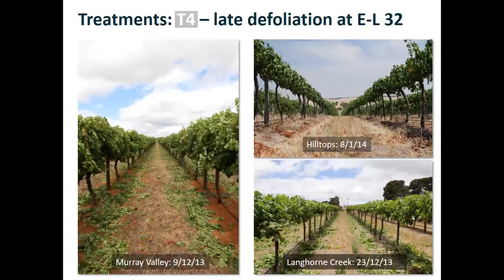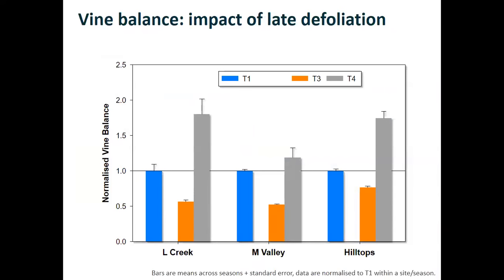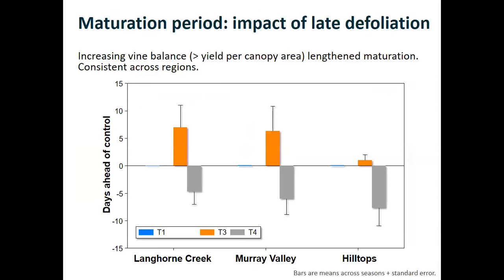The second treatment was a late defoliation or severe summer pruning, done just prior to veraison at EL32 stage, at the same time as the crop removal. We aimed to take off about half of the canopy while leaving the fruit alone. As expected, this increased the amount of fruit per unit canopy size — we increased vine balance — and that was achieved across the three sites and seasons. Therefore we have the converse in terms of maturation period: we have a longer maturation period, and indeed that was true across the sites and seasons.